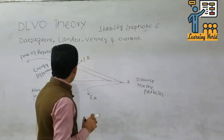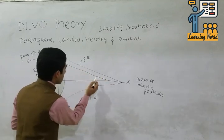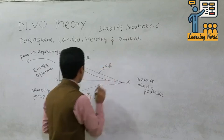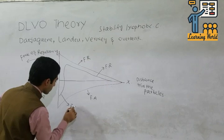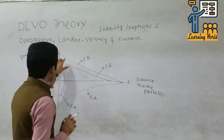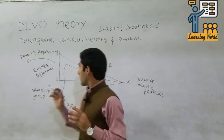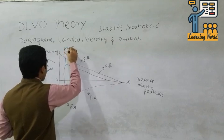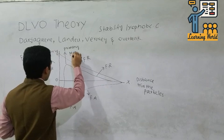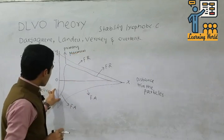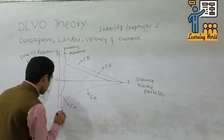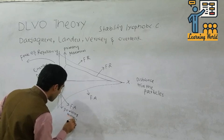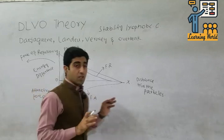At the starting point they will repulse each other — this is the force of repulsion. But this is the force of attraction. They attract each other, and the point at which the forces of repulsion are maximum is called the primary maximum. The point at which the forces of attraction occur is called the primary minimum. This is the general representation of the DLVO theory.